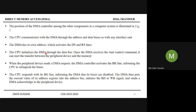The CPU initializes the DMA through the data bus. Once the DMA receives the start control command, it can start the transfer between the peripheral device and memory. After initialization, if the CPU has released control of the memory bus, it sends the final start control command to the DMA. From that point onwards, the DMA forms a communication between memory and the I/O device.